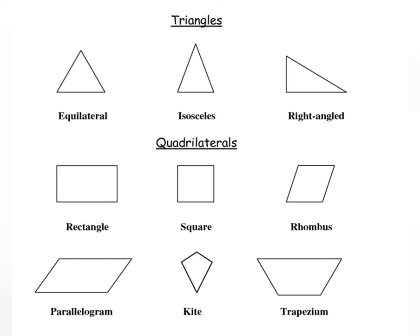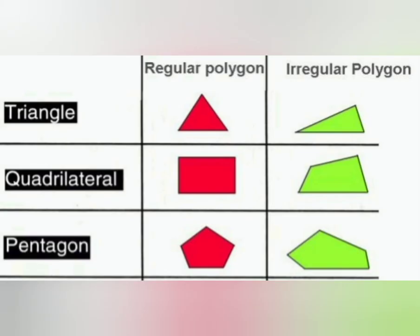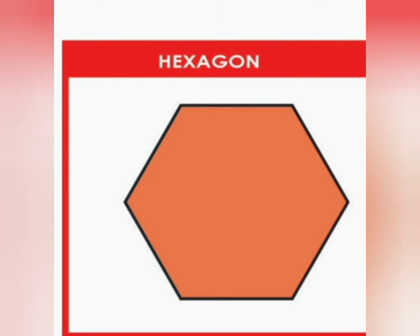Square, rectangle, everything comes under quadrilateral. The shape with five sides are called pentagon, and the shapes with six sides are called hexagon.